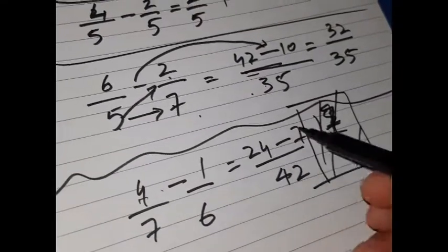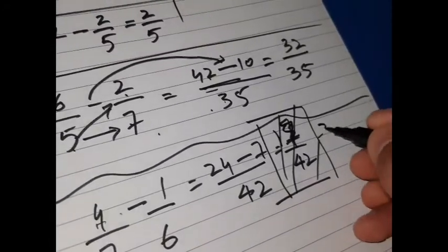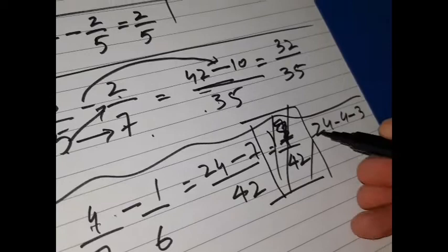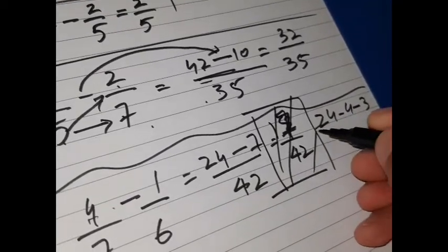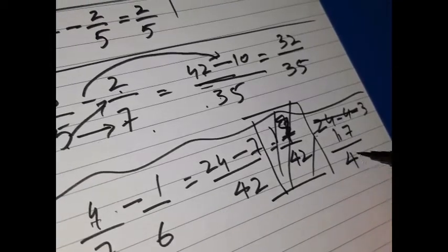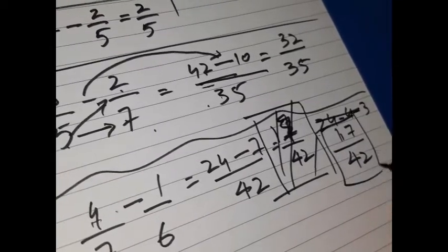So 24 minus 7: I will say 24 minus 4 is 20, then I have to minus 3 more. 20 minus 3 is 17. So I will say 17 over 42, and that is my answer.